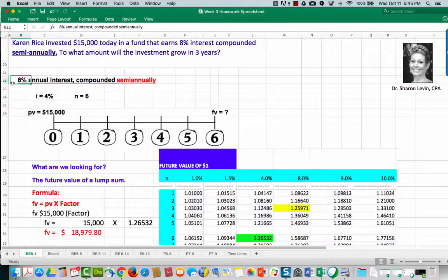Because the interest is compounded semi-annually, we take the 8% and divide it by 2. Semi-annually means twice a year. So 8% divided by 2 gives us an interest rate of 4%.